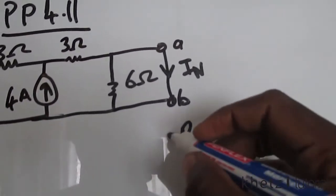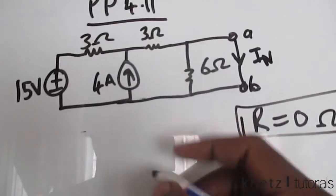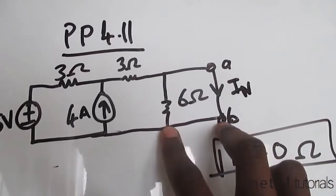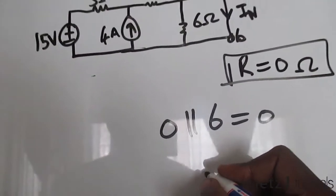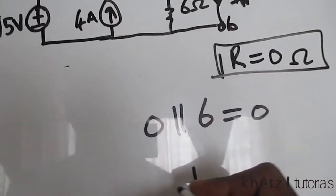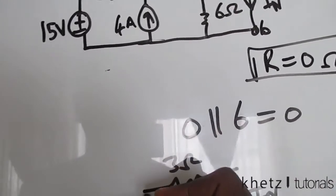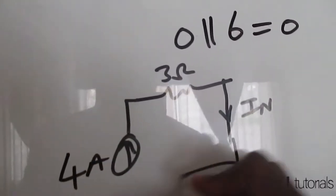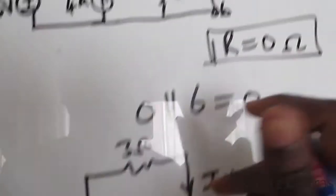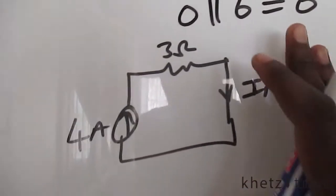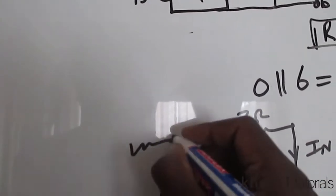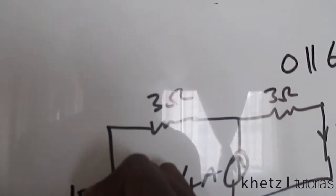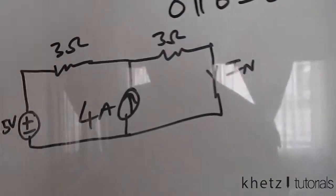So this R equals to 0 ohms is parallel to 6. So anything parallel to 0 is 0, which means we'll have another short circuit. So this is shorted by this. So our new circuit would look like this. Everything stays as it was, just that this short circuit shorted the 6 out, and that's why we've drawn this new circuit.